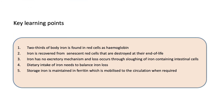The key learning points from this video are: firstly, two-thirds of body iron is sequestered within the red cells as haemoglobin. Secondly, iron is recovered from senescent red cells that are destroyed at the end of their life in the spleen. Thirdly, iron has no excretory mechanism, and loss occurs through the sloughing of iron-containing intestinal cells and, in females, through menstrual blood loss.